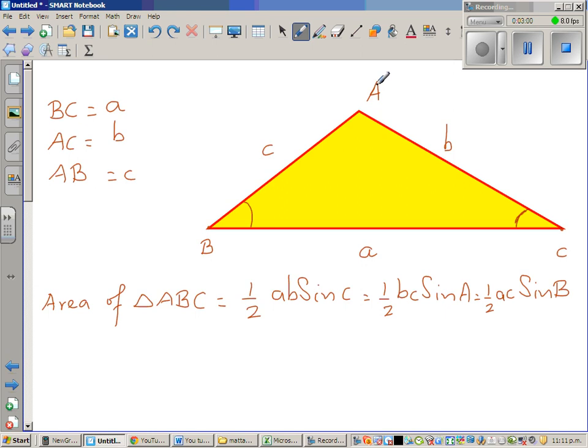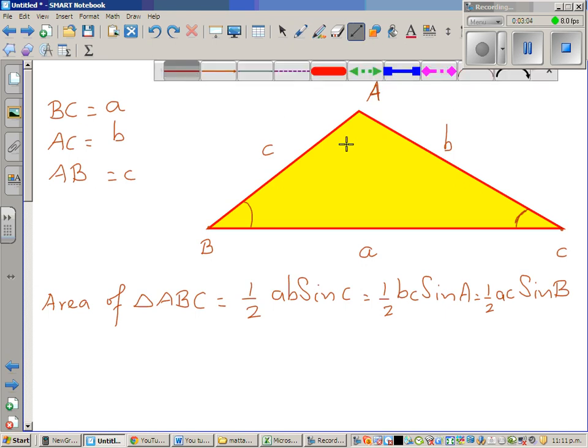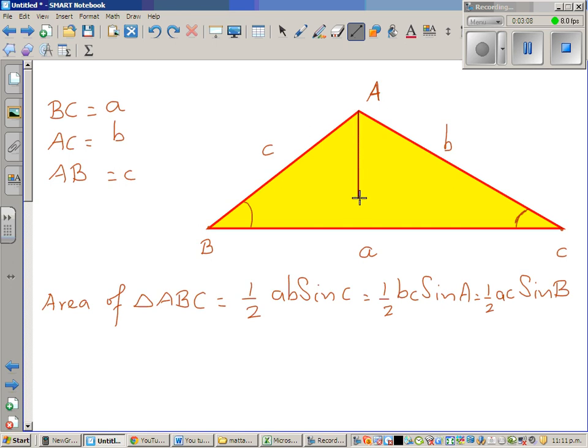This is triangle ABC. I'm going to drop a perpendicular from A on BC. This is a perpendicular from A on BC, and let me call this point the foot of perpendicular. This is a foot of perpendicular from A on BC. So this is a right angle.